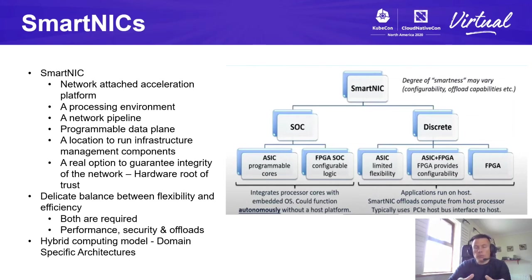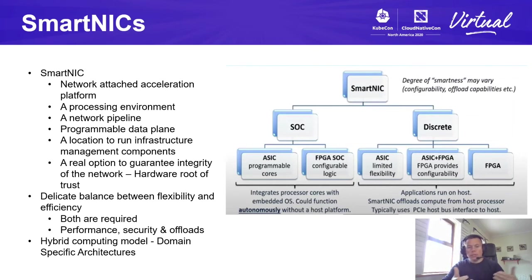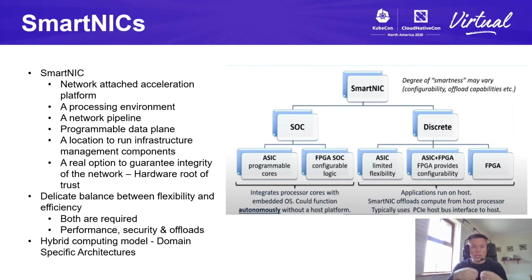Performance, security, and offloads are the types of things we can move to a SmartNIC to allow Kubernetes to focus on ensuring workloads are running in their containers and pods on their platforms. Employing SmartNICs conforms to what we call a hybrid computing model — where we have cores, memory, and storage on our main platform, plus cores and accelerators via the SmartNICs. These are domain-specific architectures, and the domain for this talk is networking processing capabilities required especially for the telco domain.